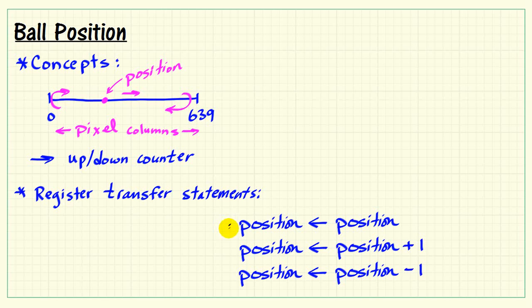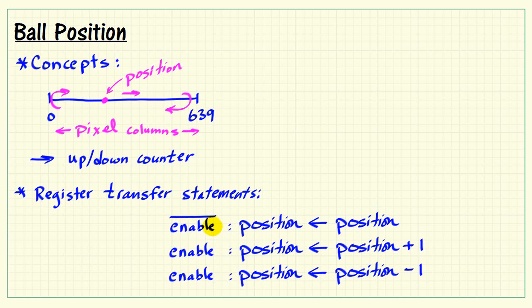Let's start formulating the conditions on these statements. The up-down counting should only occur when the register is enabled, because many times it should simply keep its present value. When it's not enabled it just remains. When it is enabled, we either go up or down. The question is: how do we know whether it should be increasing or decreasing?